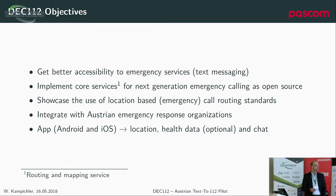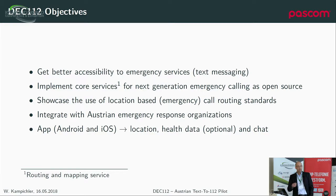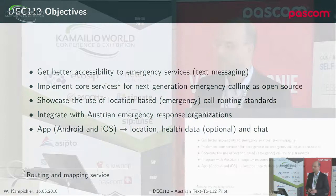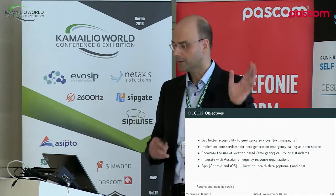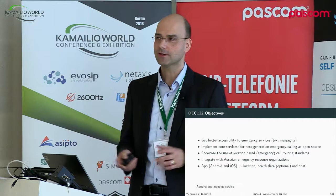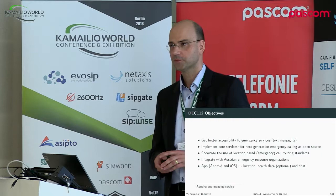So what are the objectives? The most important one is to get better accessibility for emergency services in Austria using text messaging — I'll explain later how it works today. There's currently an SMS and fax service, but that's just one way. The next objective is to implement the core services for next-generation emergency calling as open source. There are at least two that are very important: the routing and the mapping service. Routing is Kamailio-based, but it also gets a module to access a LOST service — the emergency call routing function — which is the mapping element in next-generation emergency calling. And of course we want to showcase the use of location-based emergency call routing standards, which can be used for any kind of location-based routing.